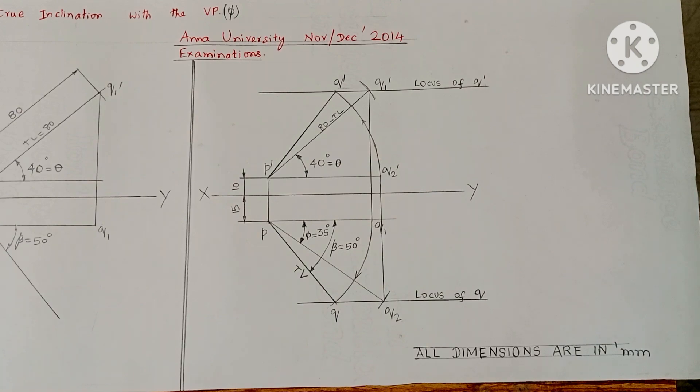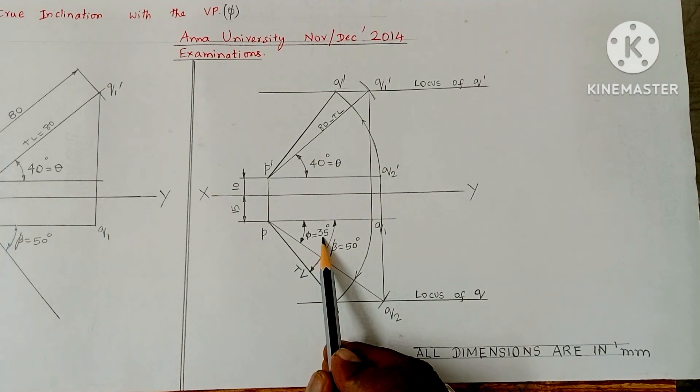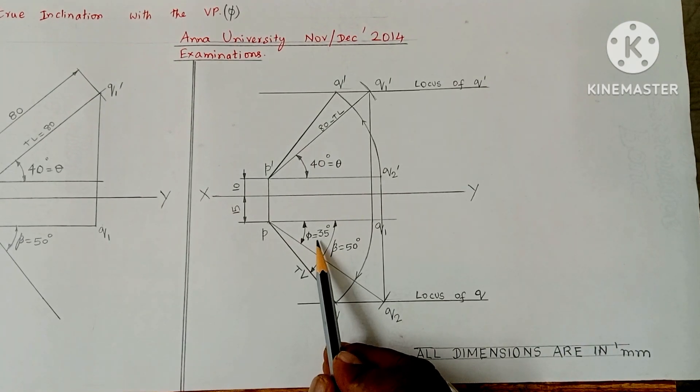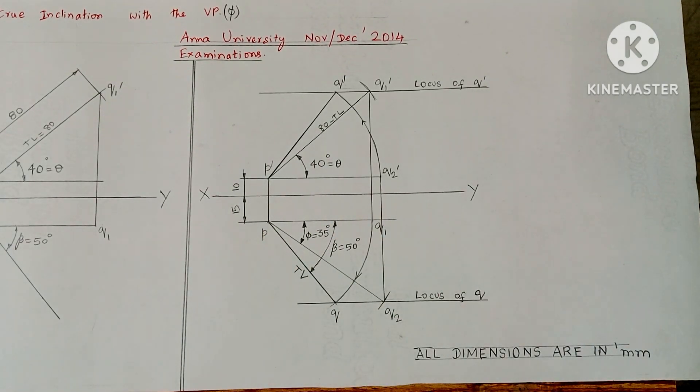In this question, you're asked to find the true inclination with VP. It is found as 35 degrees. Using the protractor, you have to measure the angle from the drawn diagram.